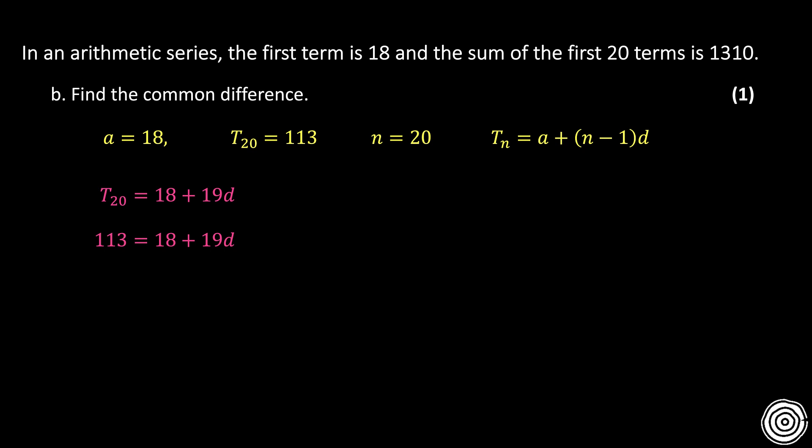Again, that 18 represents that A. 19 comes from N minus 1, so 20 minus 1, and then multiply it by D. And now it's just solving algebraically.